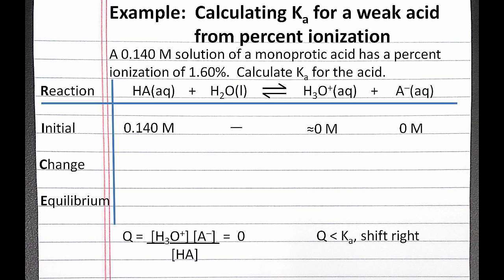We can fill in the change row using X and the coefficients in the balanced chemical equation. And we can fill in the equilibrium concentration row by adding the initial concentration and the changing concentration.